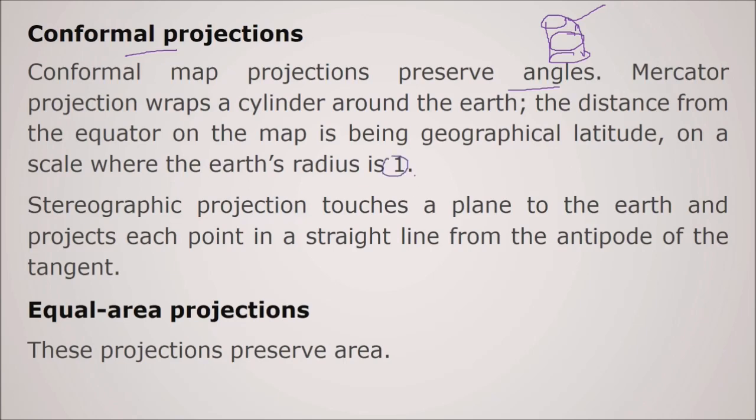Stereographic projection touches a plane to the earth and projects each point in a straight line from the antipode of the tangent. And we also have equal area projection. This projection preserves area.